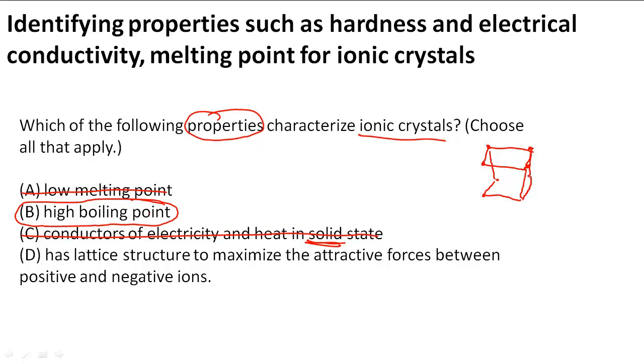So because of this, they have a certain lattice structure in between them that holds them together. And they do it to maximize the attractive force between the positive and negative ions, because that electrostatic force is going to keep them together.